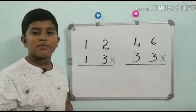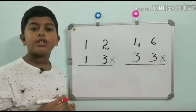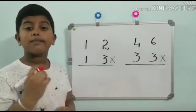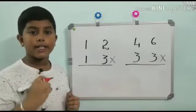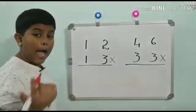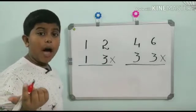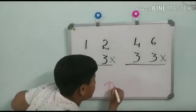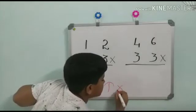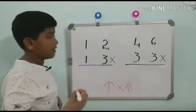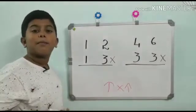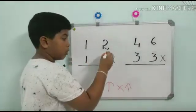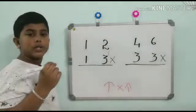Hi friends, welcome back to my channel. Today let's learn an easy and fast method of multiplication. The method is up cross up. So let's do an example. First you should do upwards, that is 2 into 3.